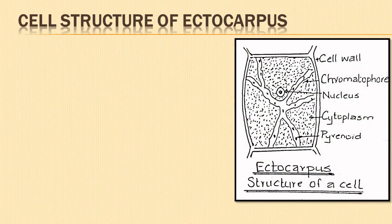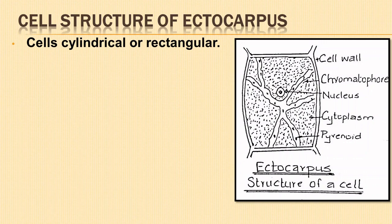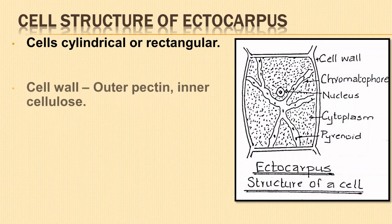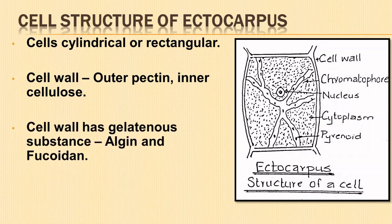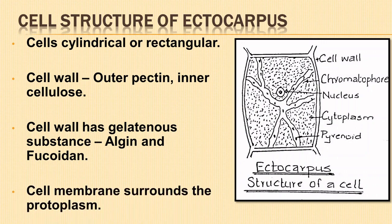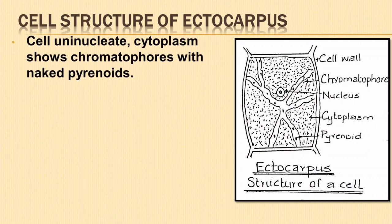Let us understand the structure of the Ectocarpus plant body. The cells of Ectocarpus are cylindrical or rectangular. There is a protective cell wall made up of an outer pectin and inner cellulose layer. The cell wall shows the presence of a gelatinous substance composed of algin and fucoidin. Inner to the cell wall is the cell membrane which surrounds the protoplast.